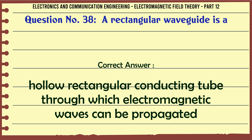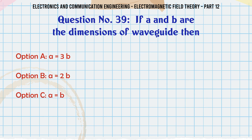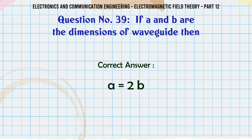If A and B are the dimensions of a waveguide, then: A. A = 3B, B. A = 2B, C. A = B, D. A = B/4. The correct answer is A = 2B.